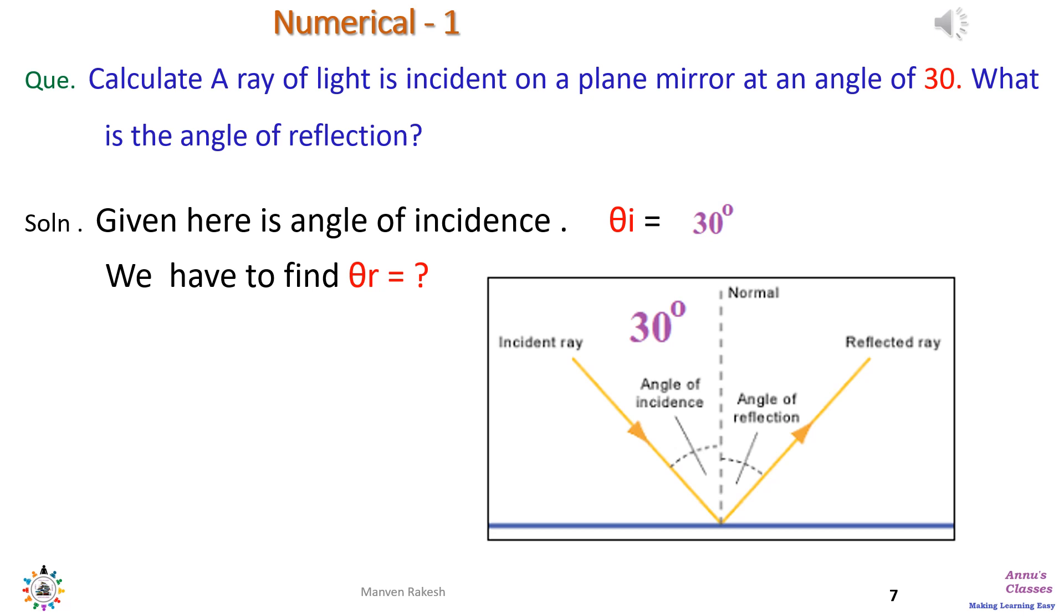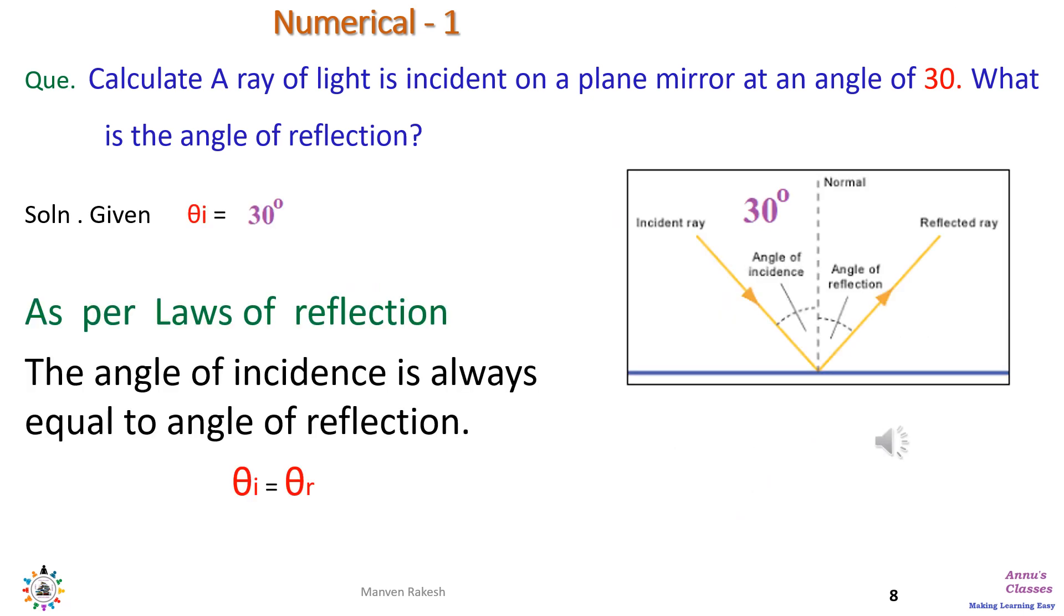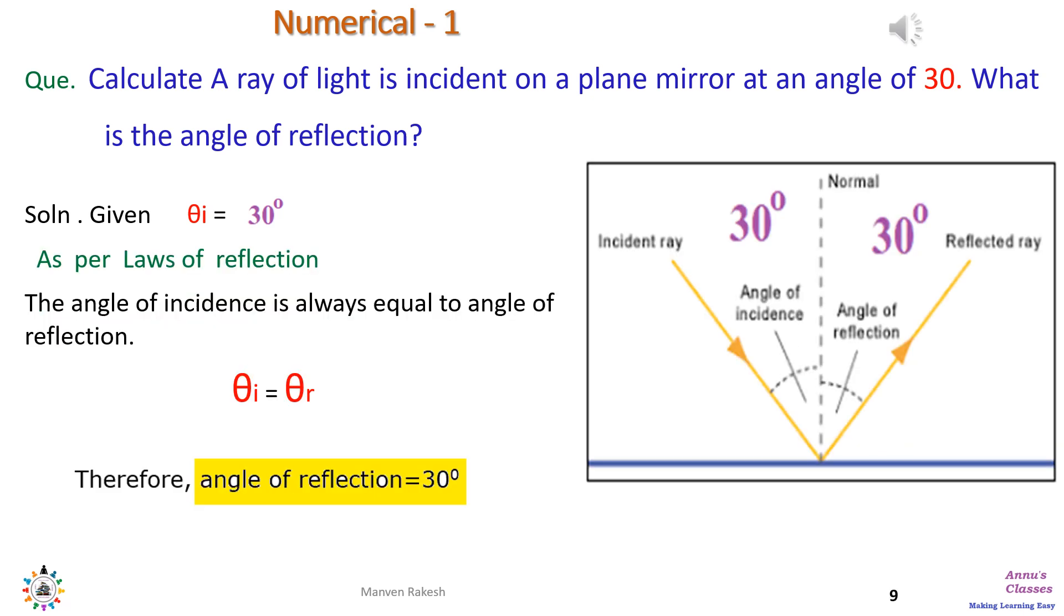We have to find out the angle of reflection, that is θr. Now as per the laws of reflection, rule number one says the angle of incidence is always equal to angle of reflection, that is θi equals θr. So we can say that angle of reflection will also be 30 degrees, same as angle of incidence. That is our answer.